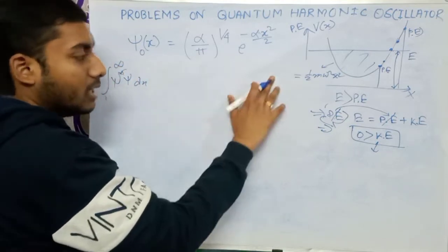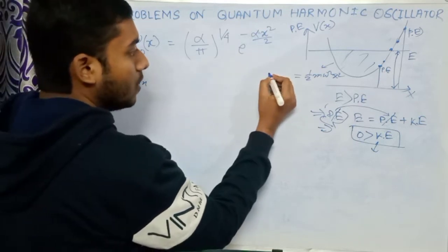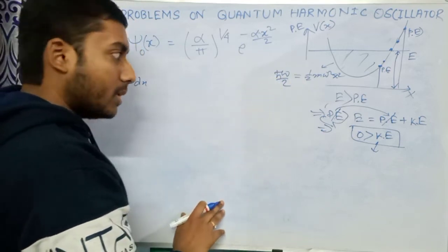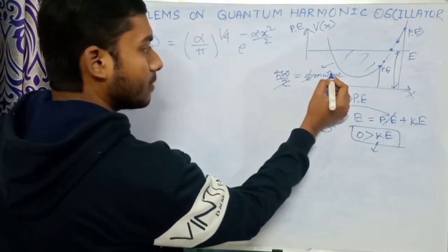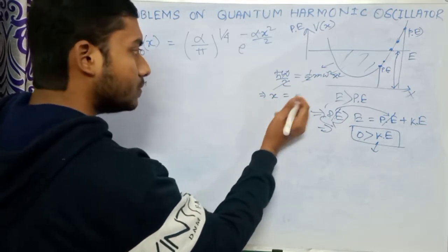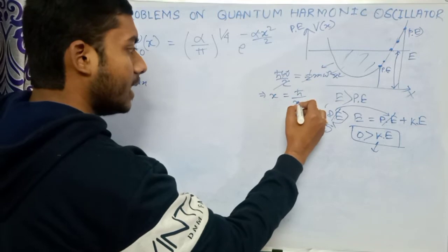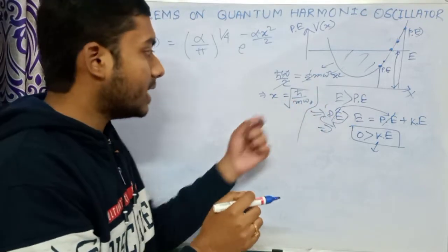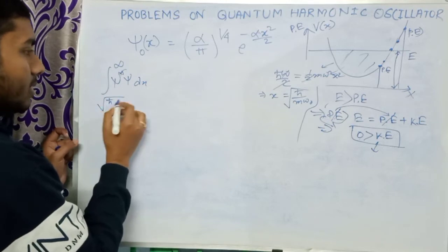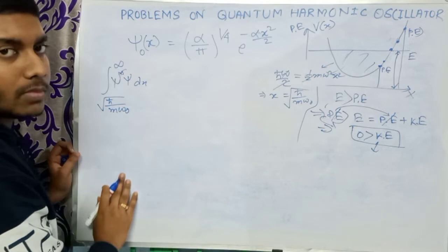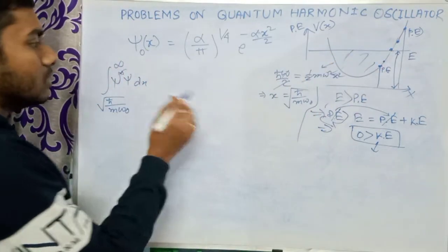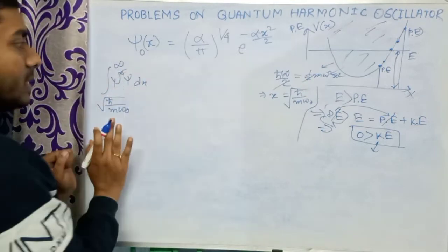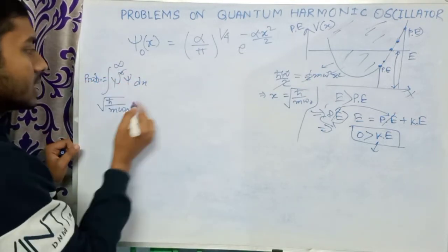The total energy in the quantum harmonic oscillator is (n + 1/2) h-bar omega. For the ground state (n=0), this gives the ground state energy h-bar omega / 2. Equating (1/2) m omega² x² = h-bar omega / 2, we get x = sqrt(h-bar / m omega). So the lower limit of integration is sqrt(h-bar / m omega) and the upper limit is infinity.